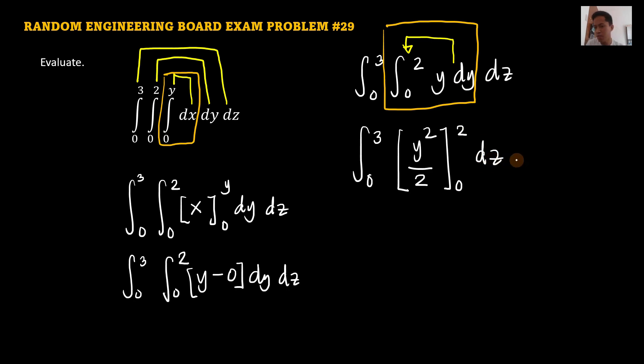Before you proceed to dz, apply the limits. Integral of, copy, and then apply the limits. Basically, substitute 2 to y, and then 0 to y. So upper limit, that's 2 squared over 2 minus lower limit, 0 squared over 2. And then here, that's derivative of dz. We have integral of 0 to 3. And then this is 2 squared, that is 4 divided by 2. So this is 2 derivative of dz.